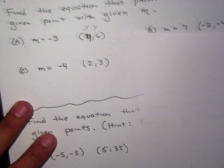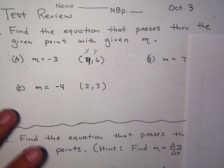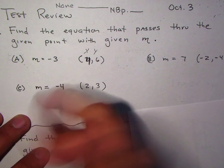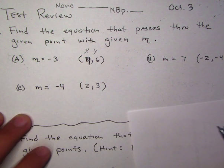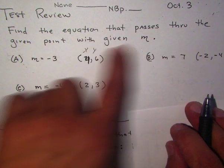All right, here we go class. This is a review for the test tomorrow, October 4th. We did the first one, so just to review: it says find the equation that passes through the given point with the given M.